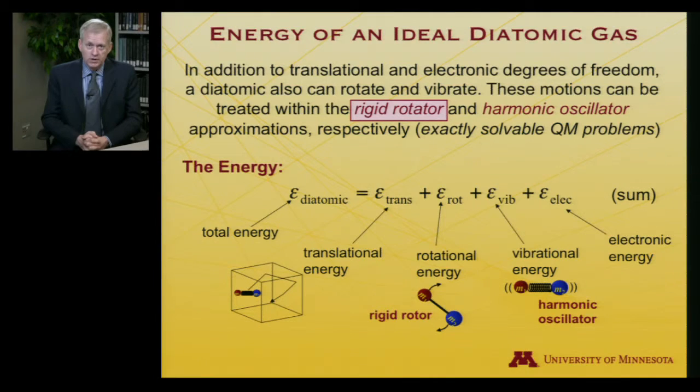In this lecture, we're going to continue working with ideal diatomic gases. Just a review from the last lecture: for the energy of an ideal diatomic gas, there are four contributors - electronic energy, translational energy, and vibrational energy which we dealt with in the last lecture. In this lecture, I'd like to focus on the remaining term, the rotational energy and its contributions to the total.